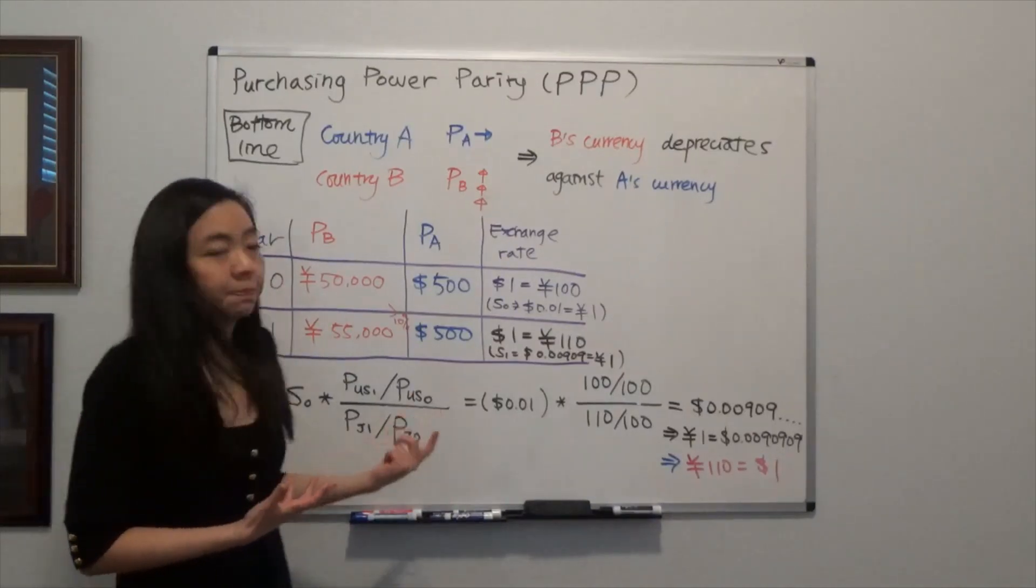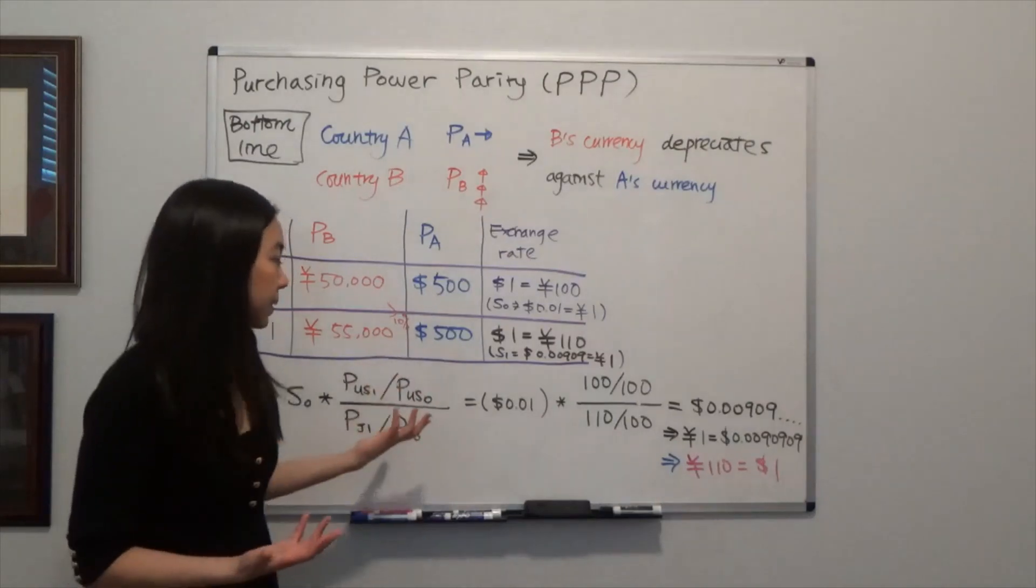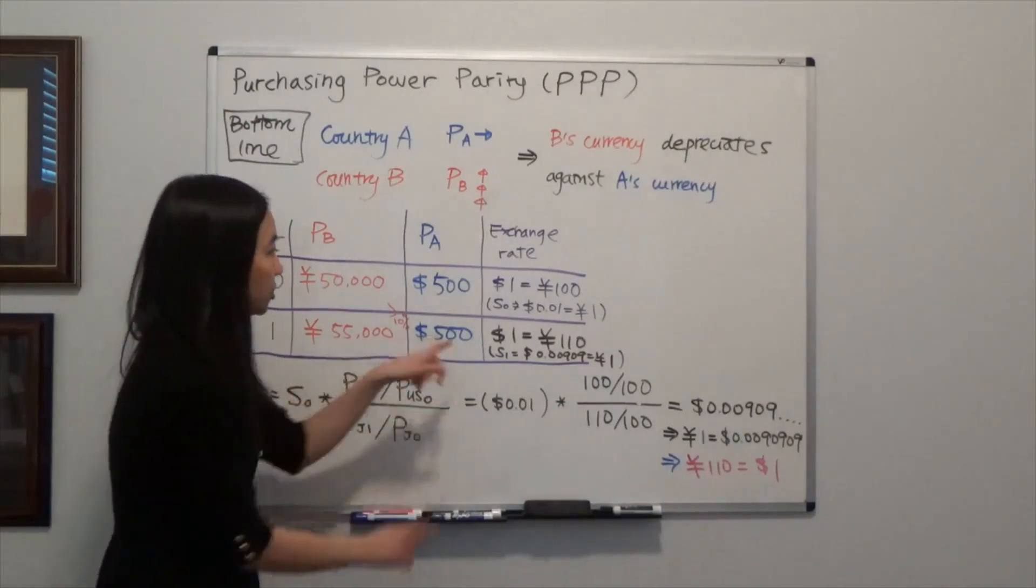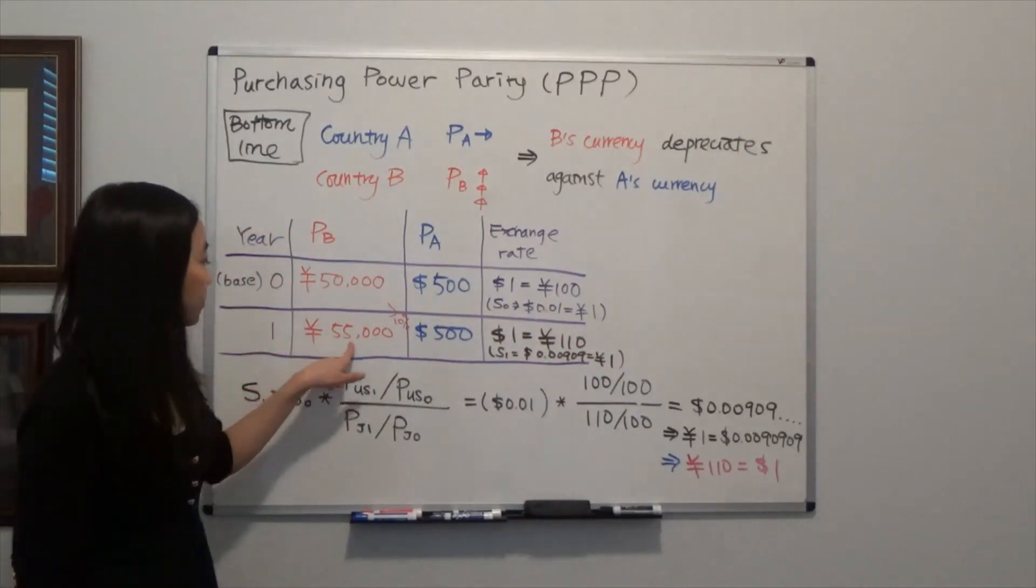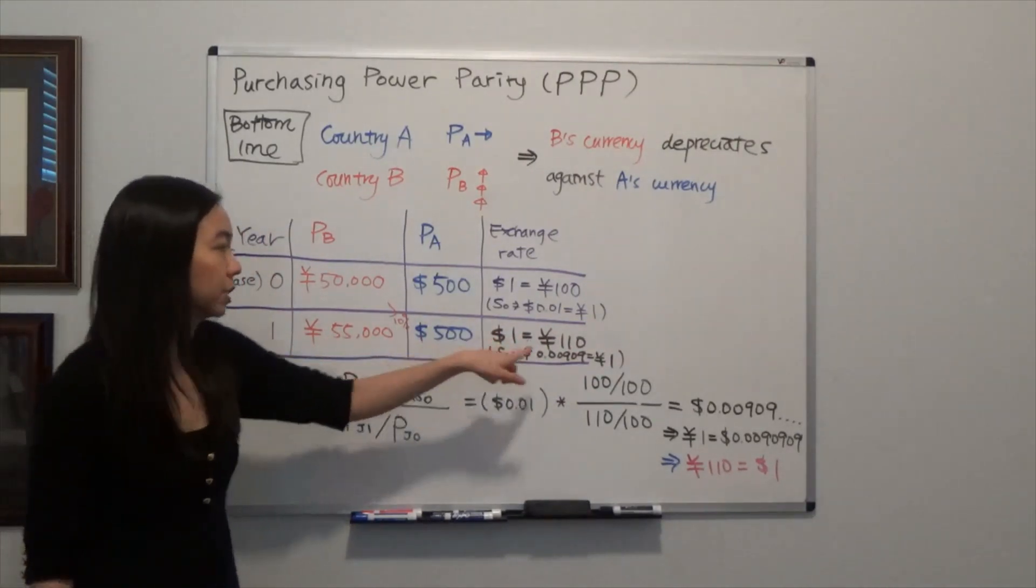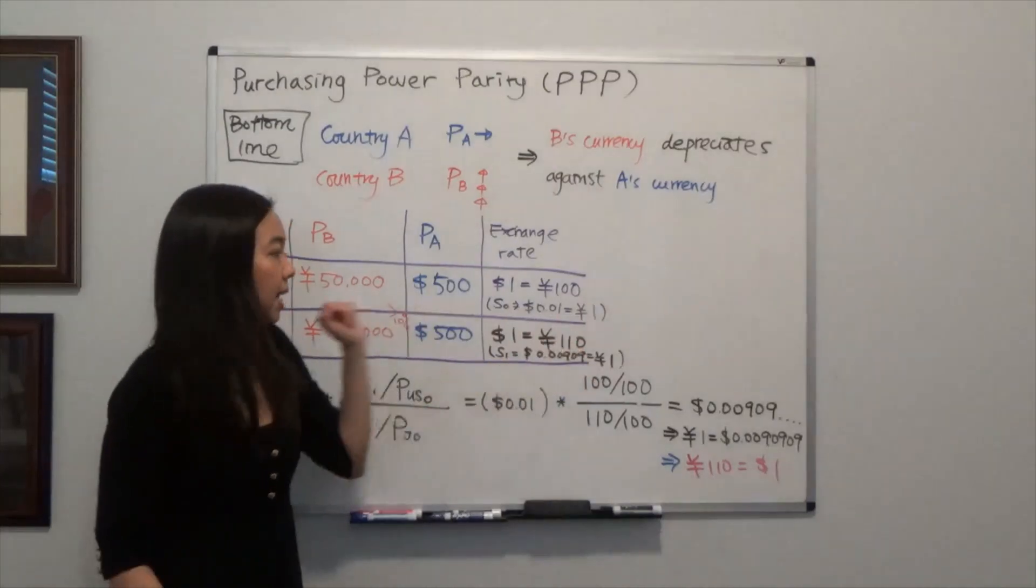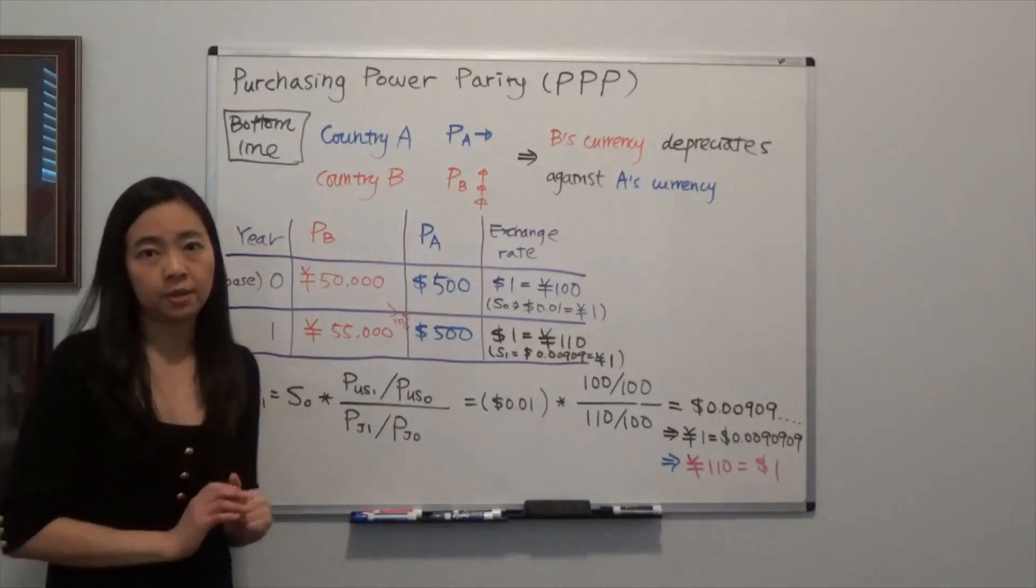So the purchasing power parity tells you, it must be that you can get 110 Japanese Yen by a dollar because 55,000 divided by 500 will give you 110. And you can use a formula to calculate that.